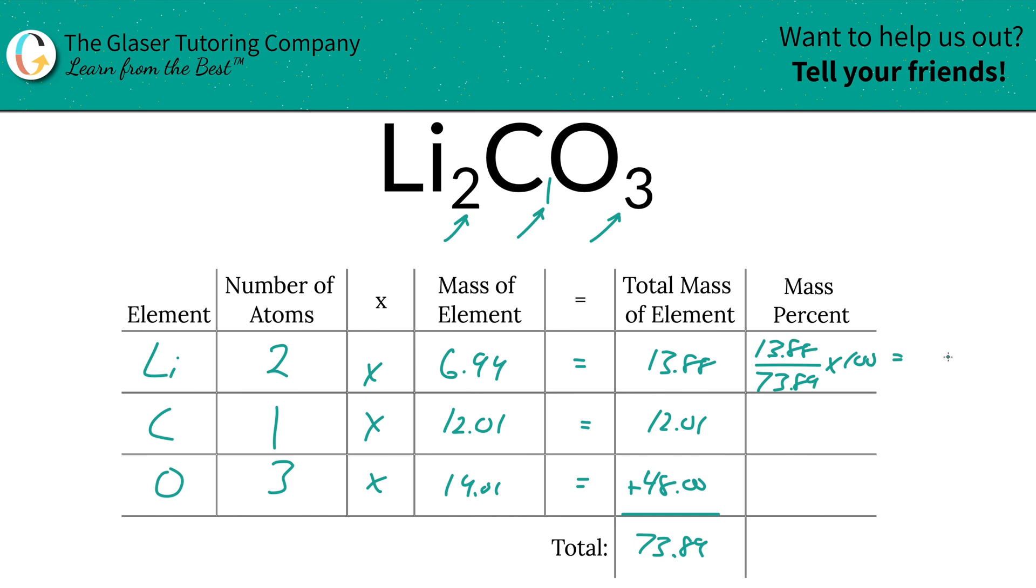Then we're going to multiply it by 100. That's a simple percent calculation, part over whole times 100. And the percentage here will work out to be roughly 18.78 percent. That's all there is to it.